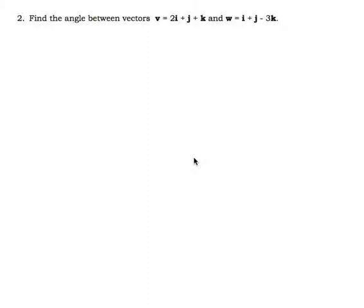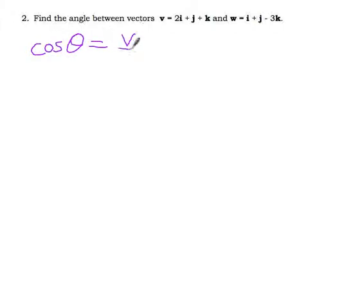So first of all, what's our formula? Cosine theta is equal to v dot product w over the magnitude of v times the magnitude of w.